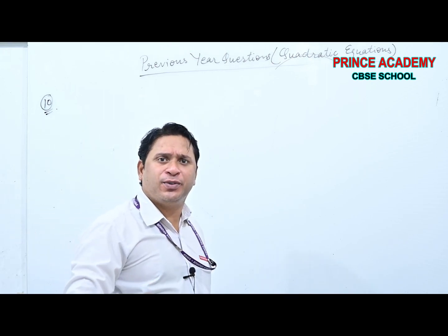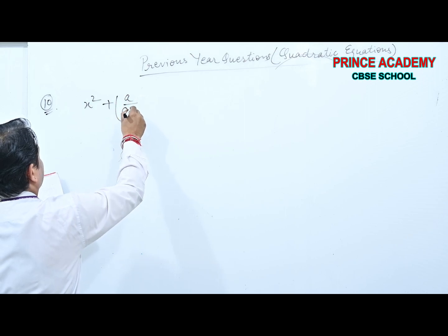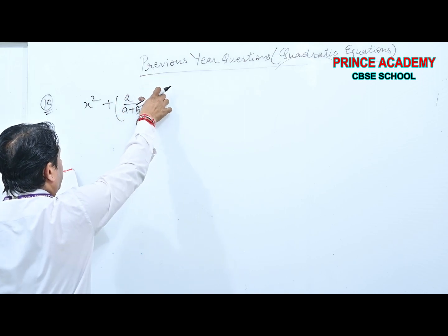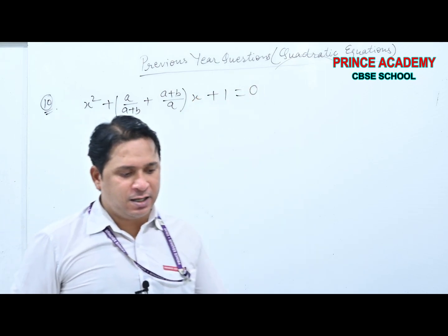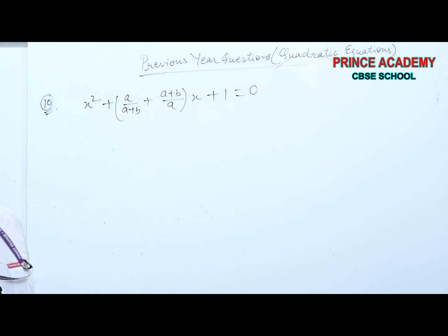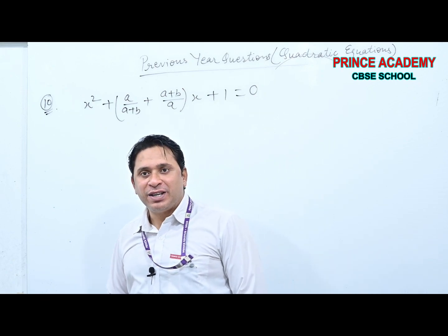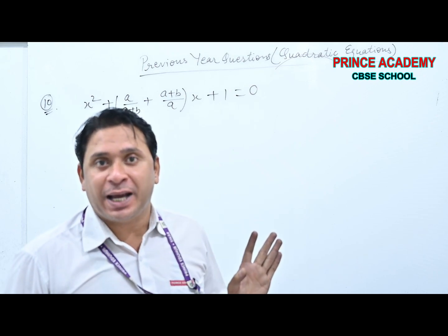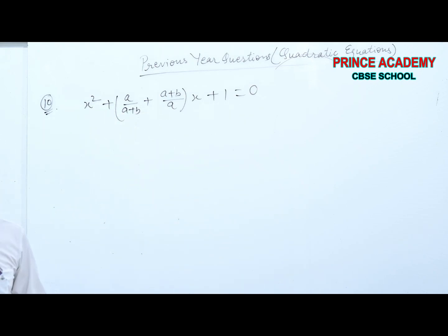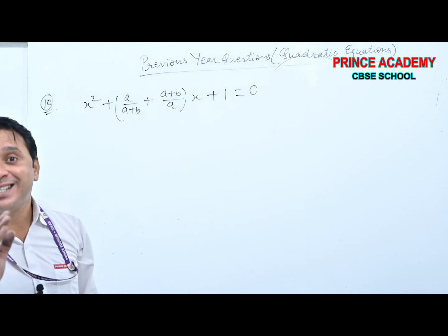Now another type: the equation (a/b)(a+b) + (a+b)/a + 1 = 0. We have to find x. This is a quadratic equation in one variable x, but with arbitrary constants a and b — no numerical values, only arbitrary constants.